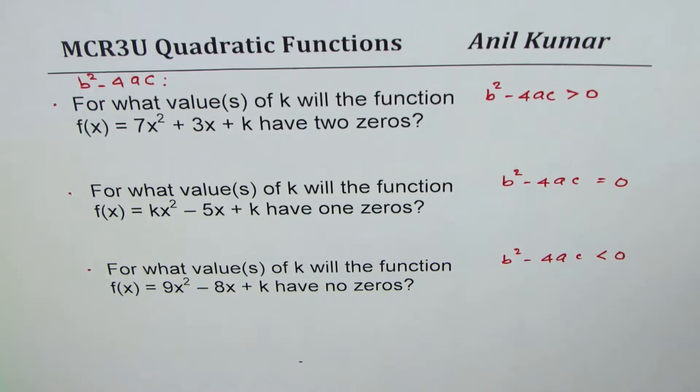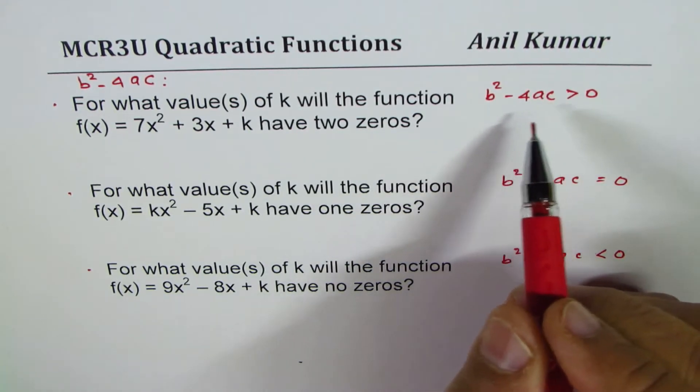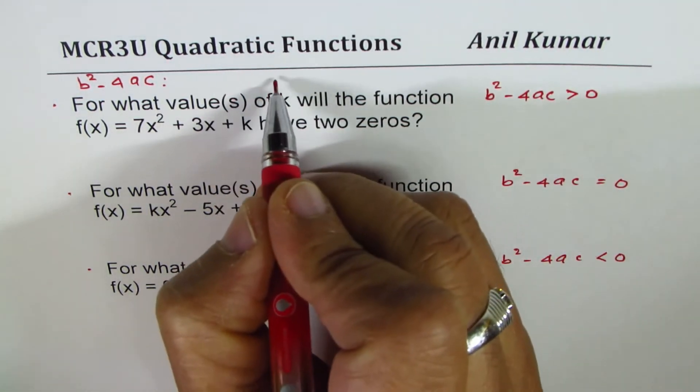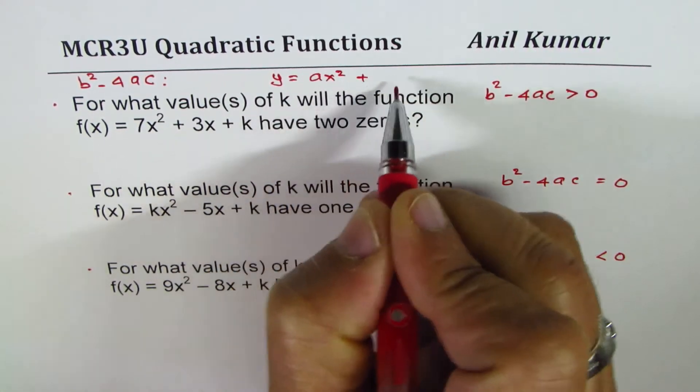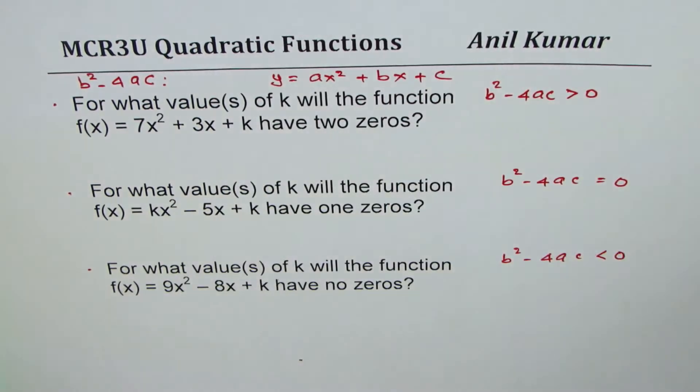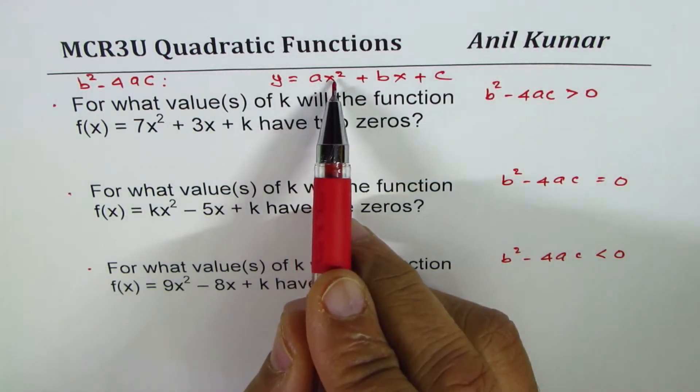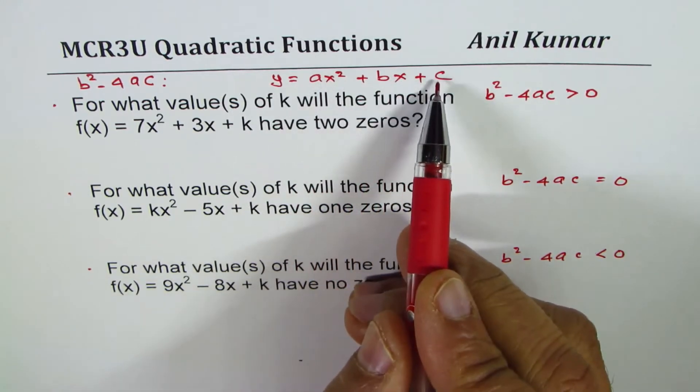When we are talking about b² - 4ac we are actually talking about standard equation y = ax² + bx + c. The quadratic equation standard form where a is the coefficient of x², b is coefficient of x and c is the constant.